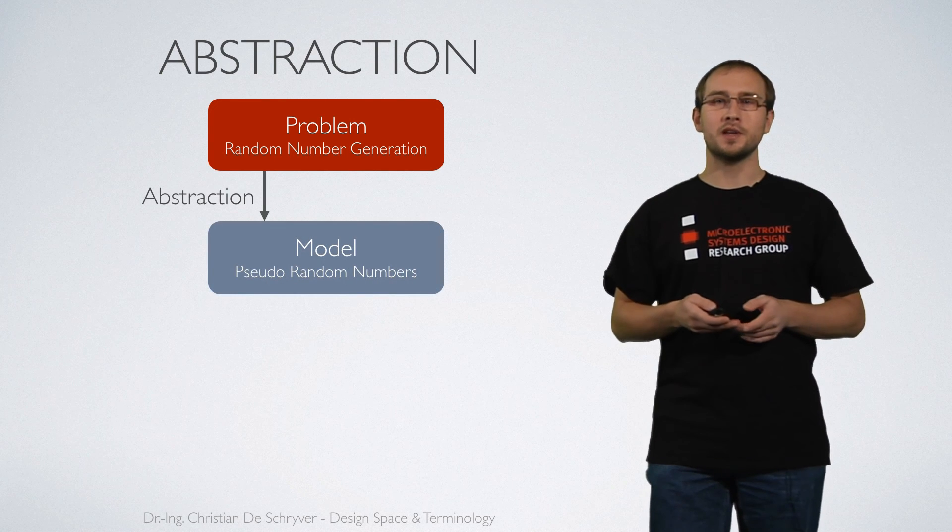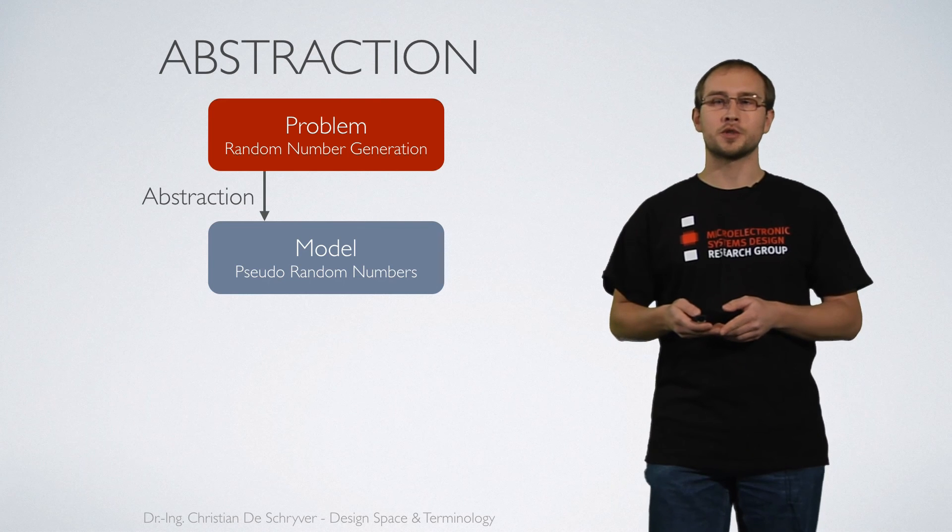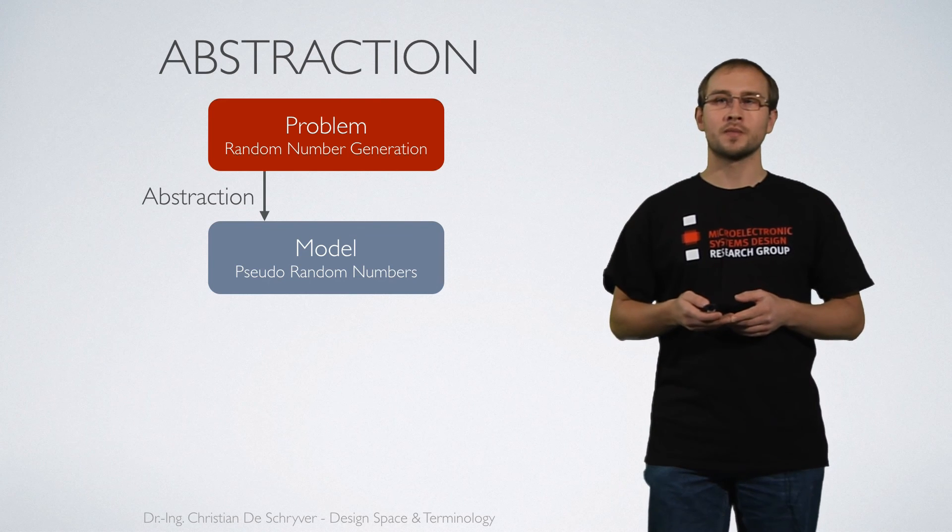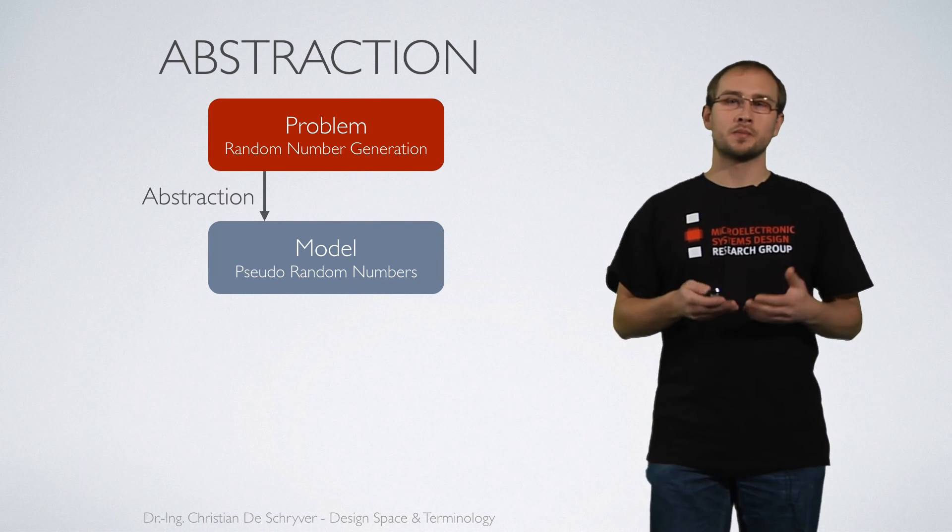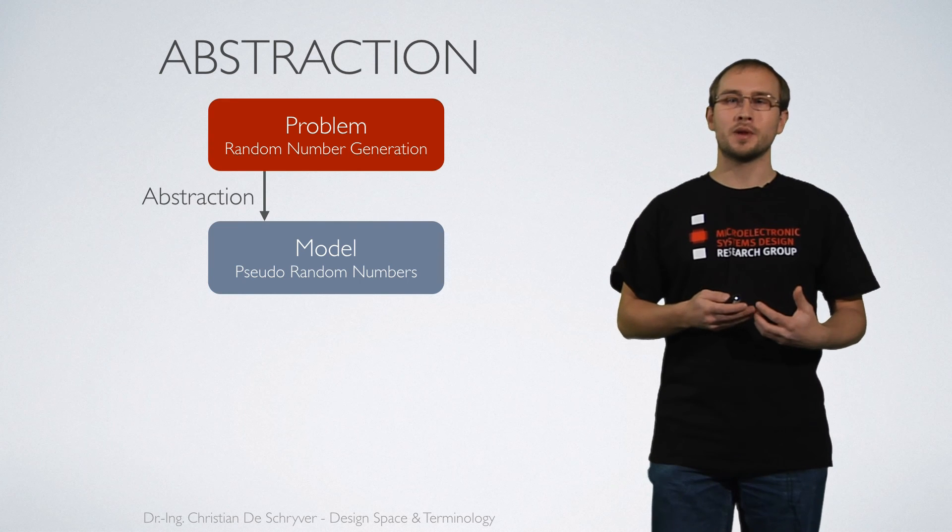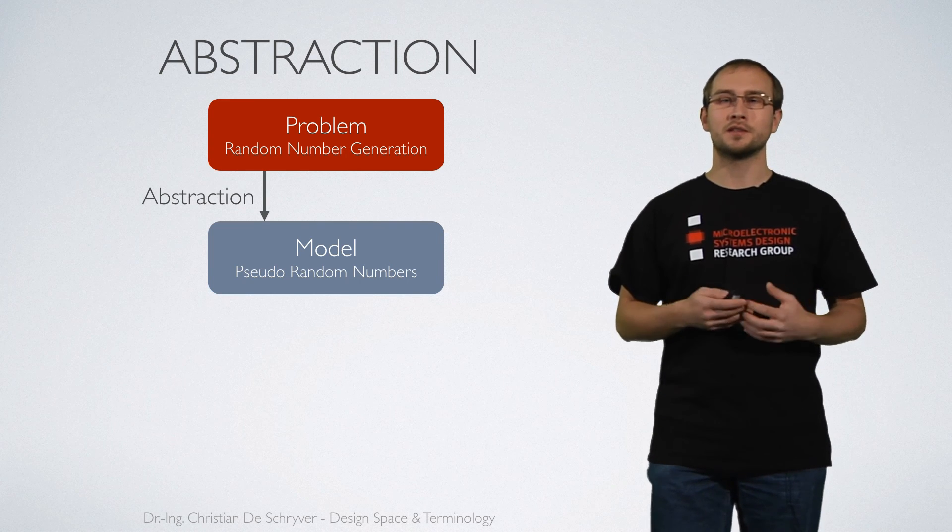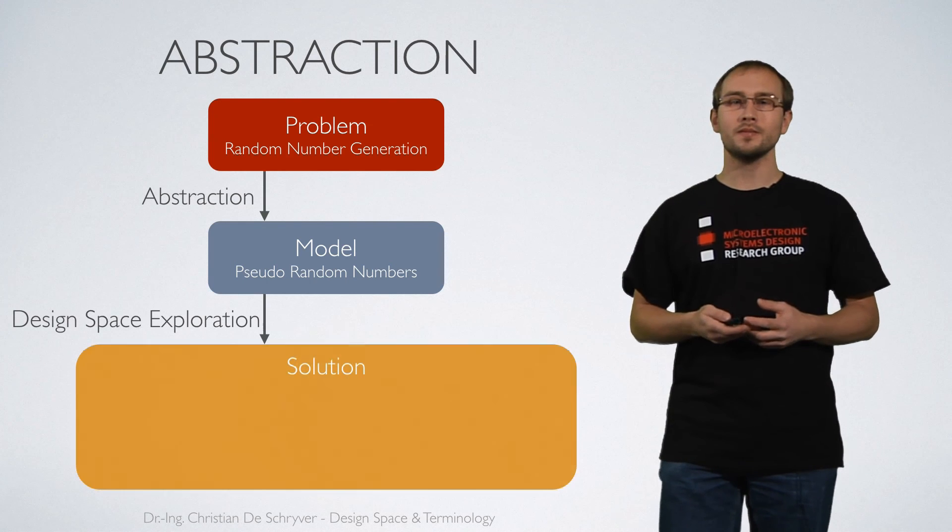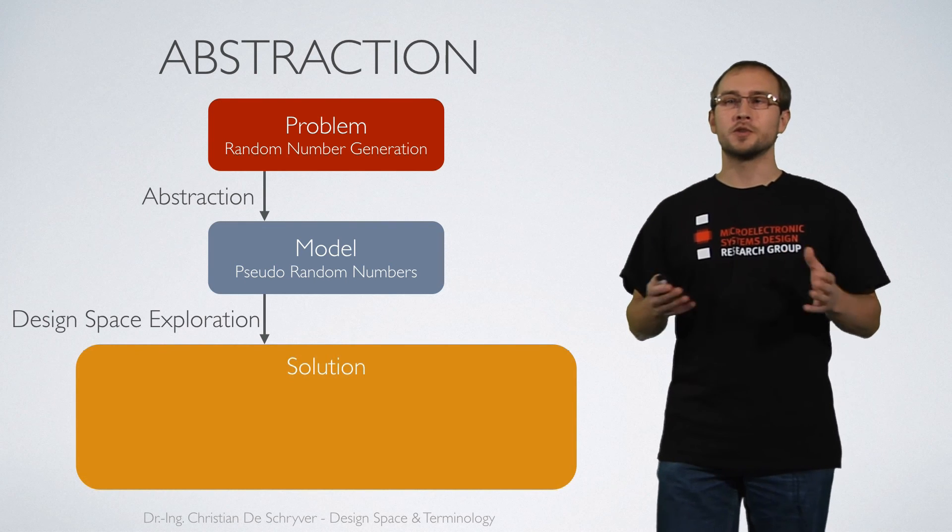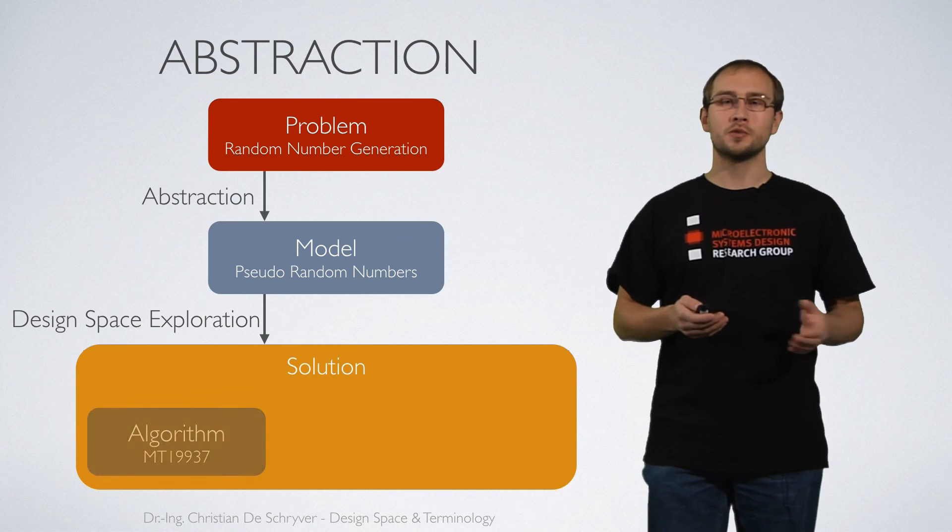The first step we take is we abstract a model for generating those random numbers. A model could be for example the type of random numbers that we have and I will explain that in a few minutes. Then we perform the actual design space exploration. We find a solution.